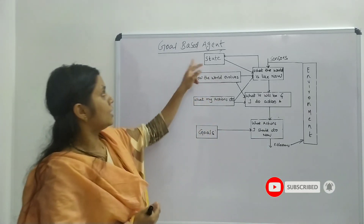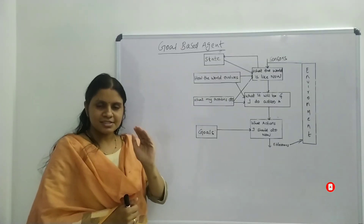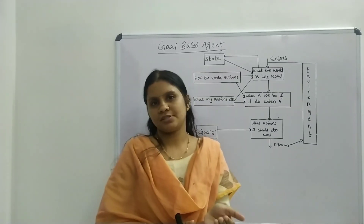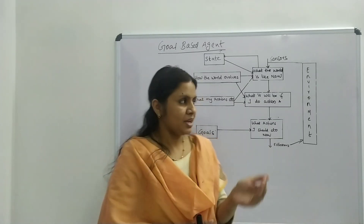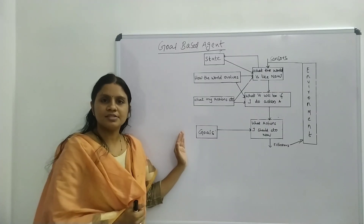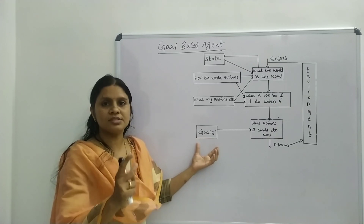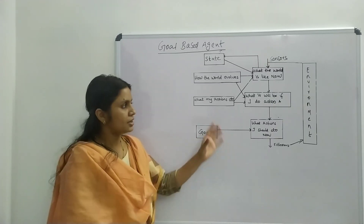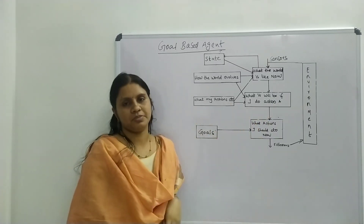So in a goal based agent, it is just an expansion of model based reflex agent. In this diagram, you can see an additional state — goal state — is added. Rest all are same as in model based.